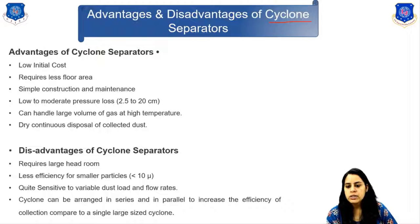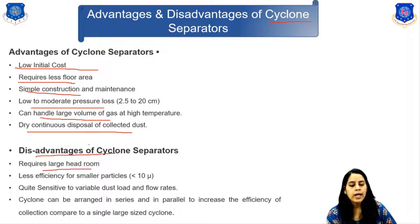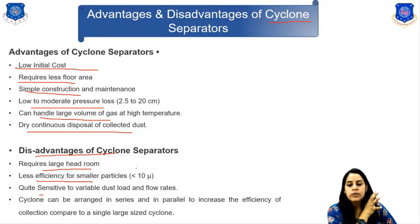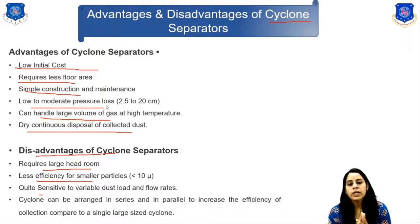Advantages of the cyclone separator include low initial cost, less floor area required, simple construction and maintenance, low to moderate pressure drop, ability to handle large volumes of gas at high temperature, and dry continuous disposal of collected dust. Disadvantages include large head root requirement and lower efficiency for smaller particles; it is also sensitive to variable dust load and flow rate. Cyclones can be arranged in series or parallel to increase collection efficiency compared to a single large cyclone, and are widely used in cement, fertilizer, petroleum, and textile industries.